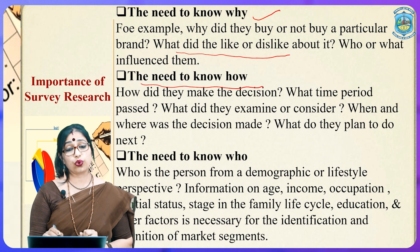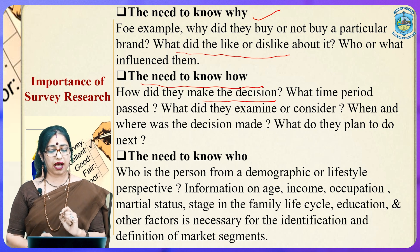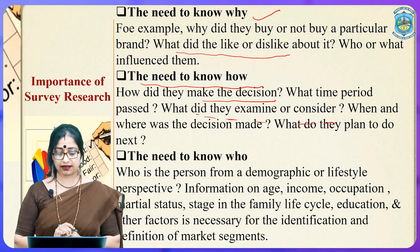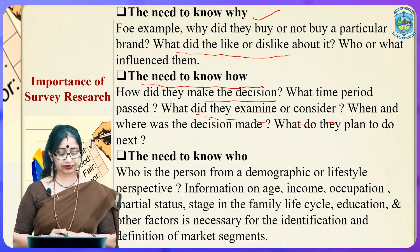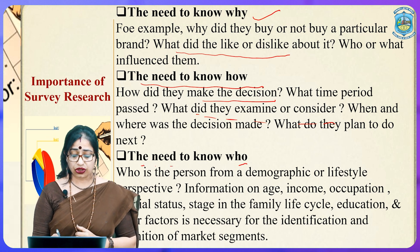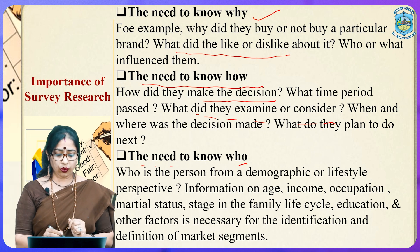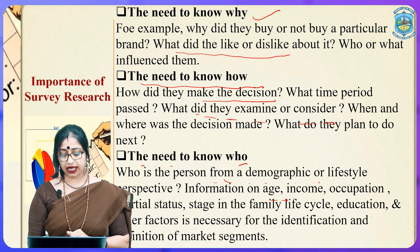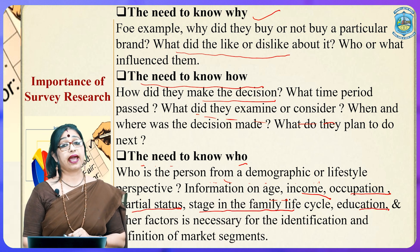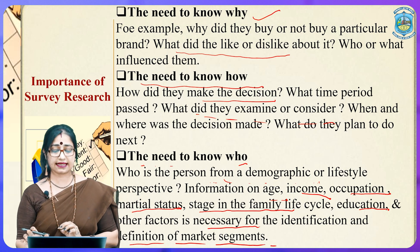The next need is to know how. How did they make the decision? What time period passed? What did they examine or consider? When and where was the decision made? What do they plan to do next? Then the need to know who — whether an individual or a group. Who is the person from a demographic or lifestyle perspective? Information on age, income, occupation, marital status, stage in the family cycle, education, and other factors are necessary for the identification and definition of market segments.